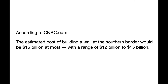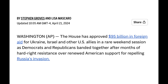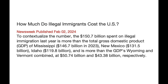According to CNBC, even with inflation we're not talking anywhere near $95 billion to secure our own borders. To put this in context, the cost of illegal immigration was $150.7 billion spent just last year — more than the GDP of Mississippi, New Mexico, Idaho, Wyoming, Vermont, and other states combined. It's costing us more to not build the wall than to support illegal immigration.